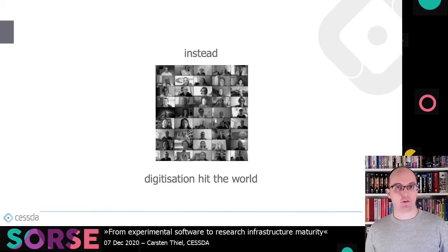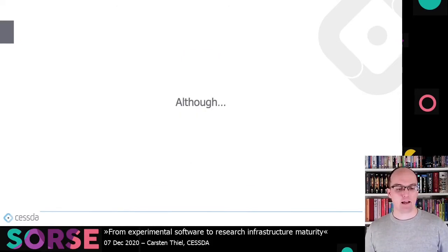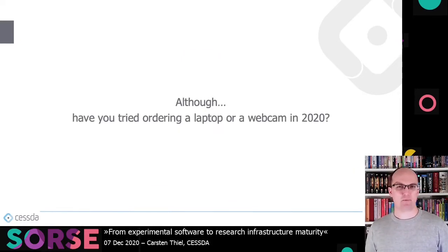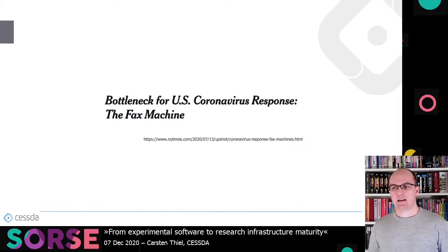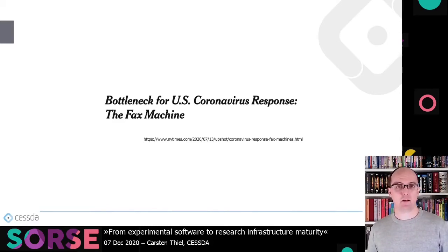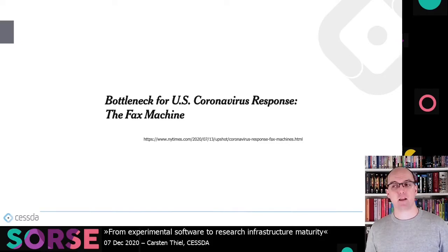The entire world overnight went into home office. Zoom conferences became the thing, although there were some problems — have you tried ordering a laptop or webcam to equip your home office this year? Other surprising dependencies included fax machines to transmit test data from facilities and laboratories to authorities, not just in the US. Germany had very similar problems for a very long time — a reliance on very outdated technology.